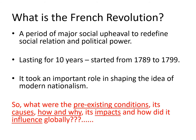First of all, what is the French Revolution? It was a period of major social upheaval in France when people sought to completely change the relationship between the rulers and those they governed — that is, their subjects — and to redefine the nature of political power. It started on July 14, 1789, when revolutionaries stormed a prison called the Bastille, and lasted for 10 years. The revolution came to an end in 1799 when a general named Napoleon overthrew the revolutionary government and established the French Consulate under his leadership. In spite of chaotic bloodshed, the French Revolution took an important role in shaping the idea of modern nationalism by showing the world the power inherent in the hands of the people.